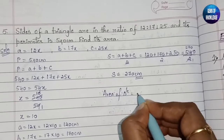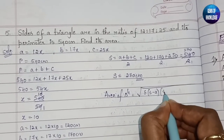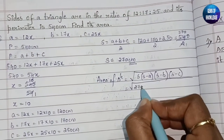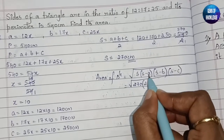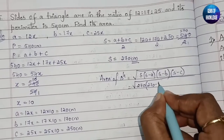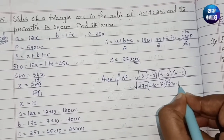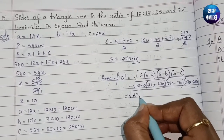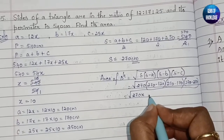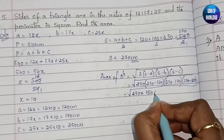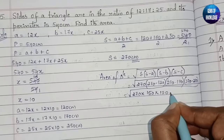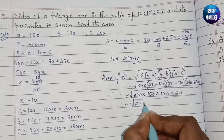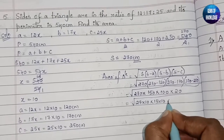Using Heron's formula: area equals root of s(s−a)(s−b)(s−c). That is root of 270 × (270−120) × (270−170) × (270−250), which gives root of 270 × 150 × 100 × 20.